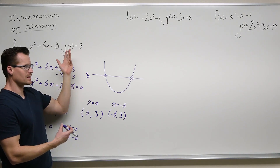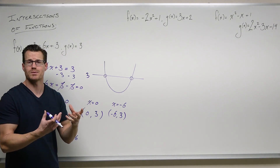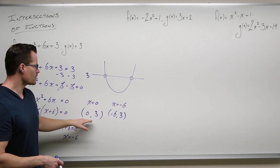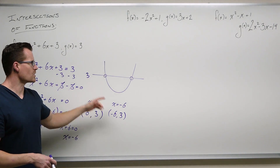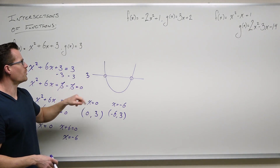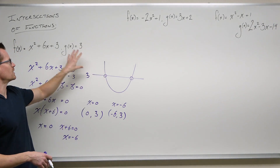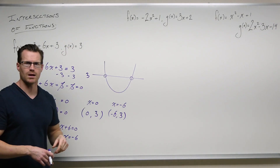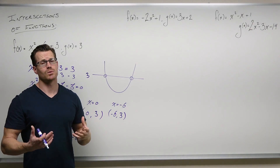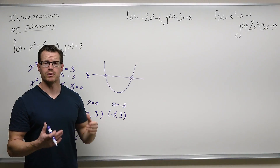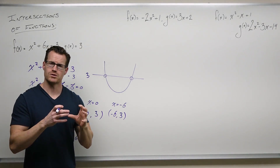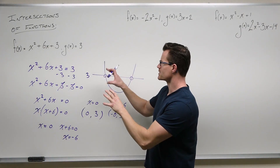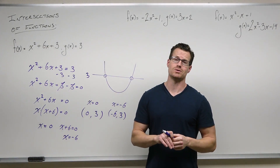We plug into the constant here and also get three. So we know that these two points are the two points of intersection of this parabola and that horizontal line. That's what we are doing when we set two functions equal — finding the points of intersection. That's how you do it.